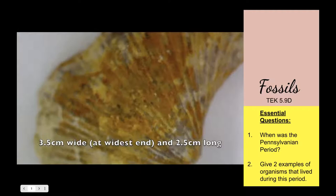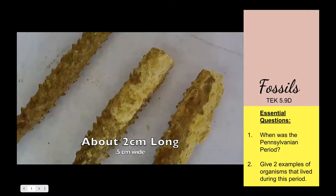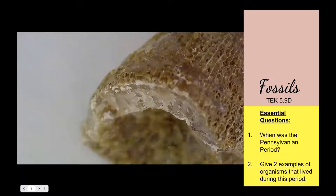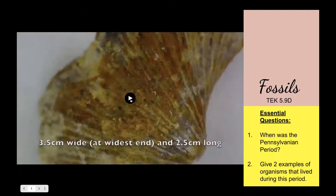This one should probably be the easiest for you to identify. Those really tiny, skinny fossils with little spikes coming out of them were probably the tiniest fossils collected in this display. And the biggest fossil collected was about six to eight centimeters long — kind of wide at one end and then got skinny toward the other end. Think about what you think those things were, and also think about what the environment was like here in Texas during the Pennsylvanian period.